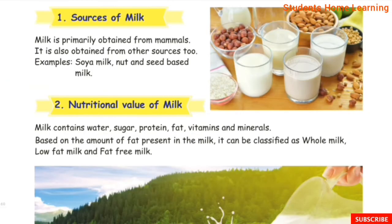Sources of milk. Milk is primarily obtained from mammals. It is also obtained from other sources too, such as soya milk, and nut and seed-based milk.